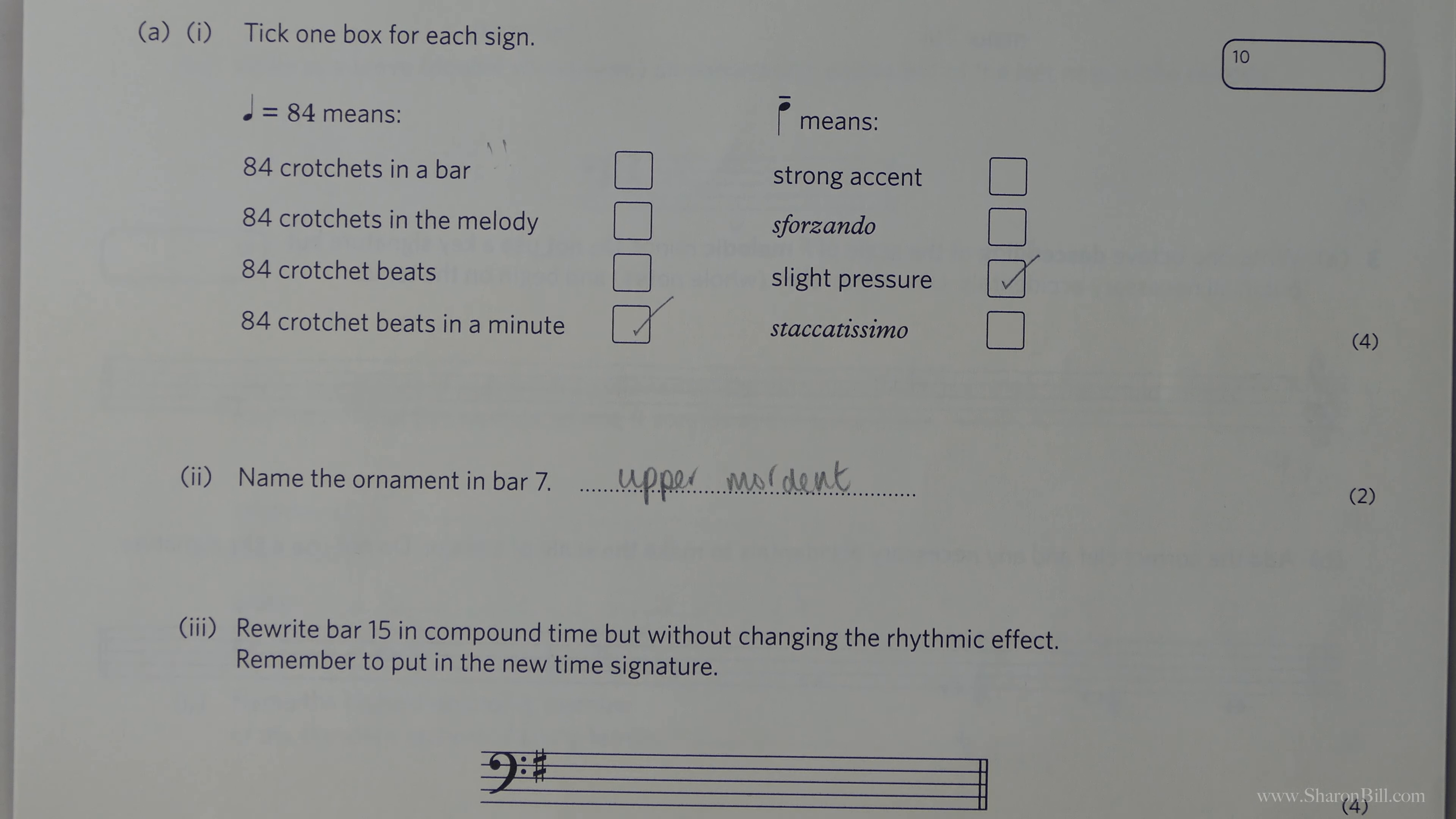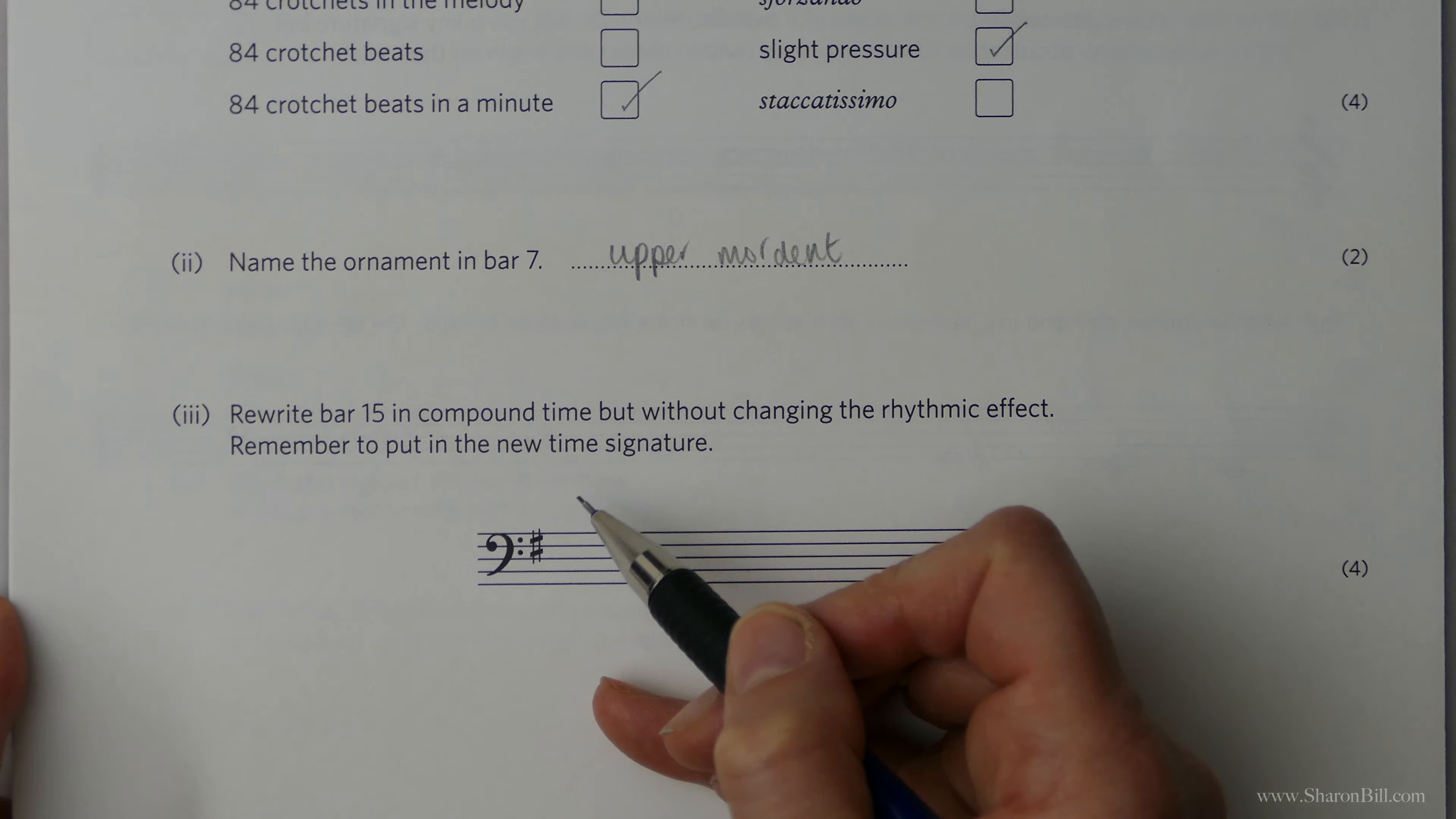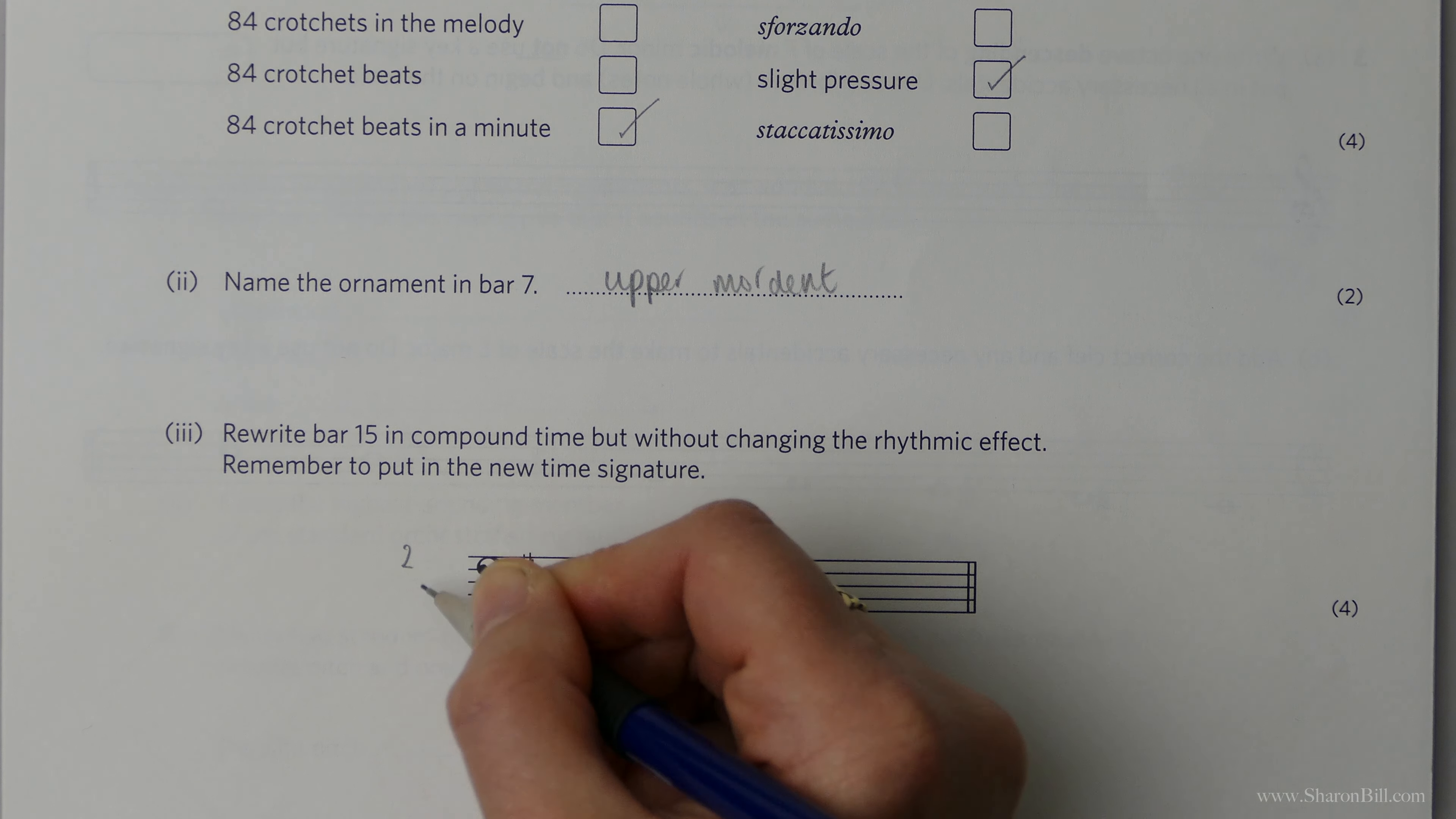Now then, we need to rewrite bar 15, but we're going to change it into compound time, but without changing the rhythmic effect. We can't recompose it. So we need to change the time signature. So let's look what we've got to begin with. So each beat is a quarter note or a crotchet beat. So for our compound time signature, we're going to have to have two beats per bar. We still need to be in duple time.